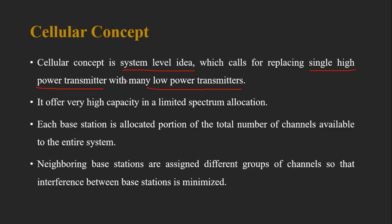Moving from 1G to 2G, and from 2G to 3G and 3G to 4G, we have more low-power transmitters and the cell size is reducing in order to support more users. This offers very high capacity in a limited spectrum allocation. Each base station is allocated a portion of the total number of channels available to the entire system, and we reuse the same channels in other areas.